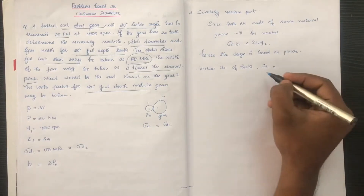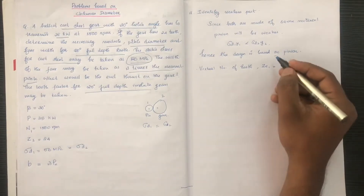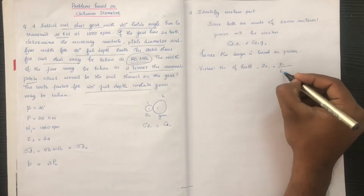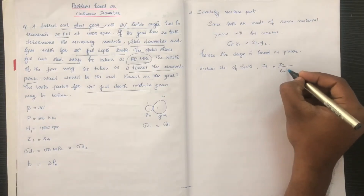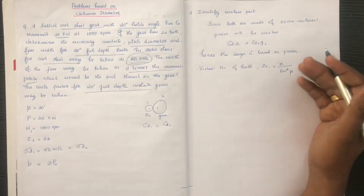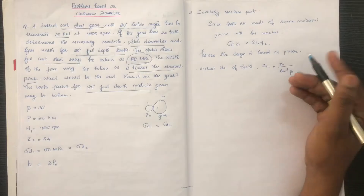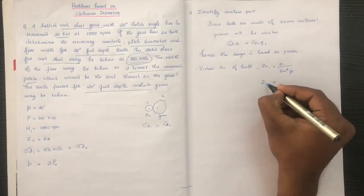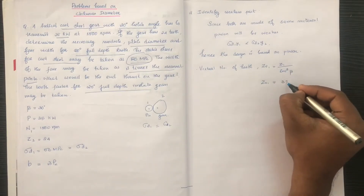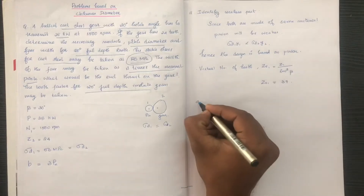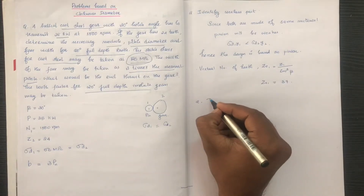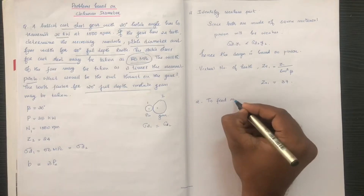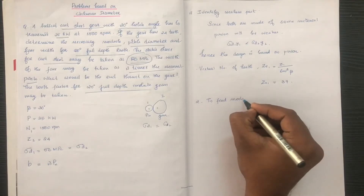Z1 is equal to 24. Now we are going to find the module (mn) for this helical gear design.